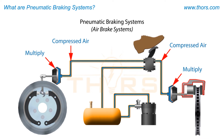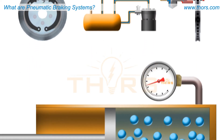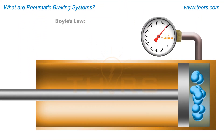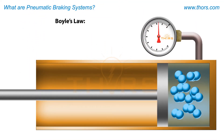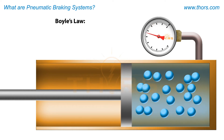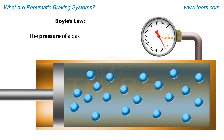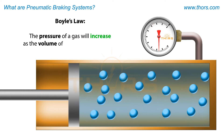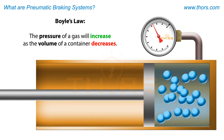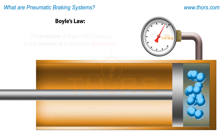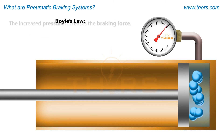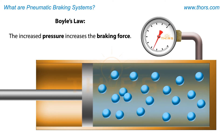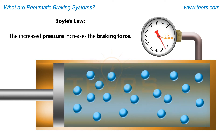The compressed air used within pneumatic braking systems is generated through Boyle's law. According to this law, the pressure of a gas, such as air, will increase as the volume of a container decreases. The pneumatic braking system uses the pressure created when air is compressed to increase braking force.